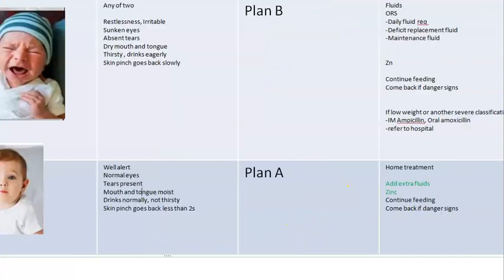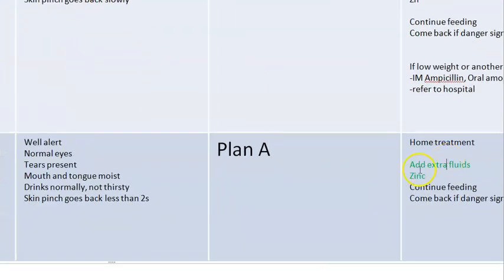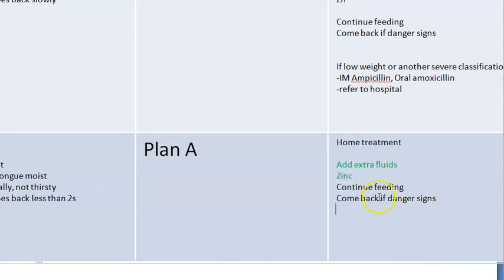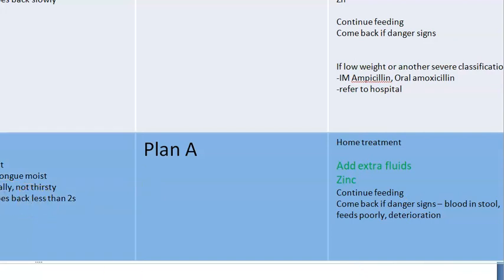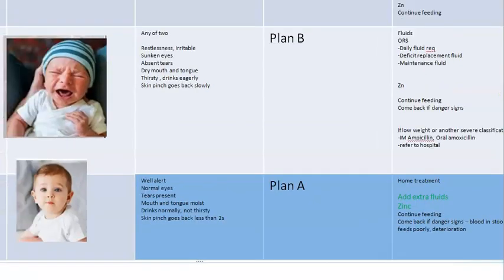For no dehydration — Plan A — you give home treatment. Tell the mother to give the baby zinc, which will reduce the frequency of diarrhea. Ask the mother to add extra fluids, continue feeding, and come back if there are any danger signs: lethargy, deteriorating condition, blood in stool, feeds poorly, or general deterioration. Follow up after four days.